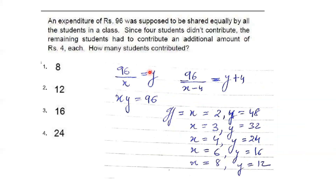This is a mean-type question. An expenditure of rupees 96 was supposed to be shared equally by all students in a class. Since four students did not contribute, the remaining students had to contribute an additional 4 rupees each. We have to find how many students actually contributed.